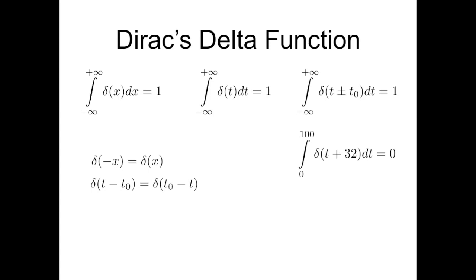The function is, by definition, symmetric with respect to the vertical axis, so that delta of minus x is equivalent to delta of x, or delta of t minus t0 is equivalent to delta of t0 minus t.